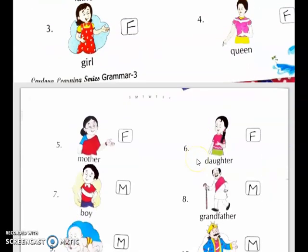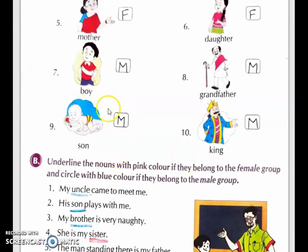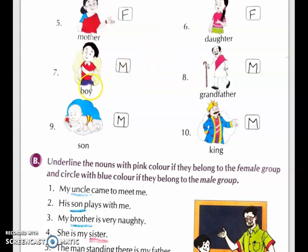Now turn your page to the next page. Fifth one: mother — mother is female, so we write F. Sixth one: daughter — daughter is female, so we write F. Seventh: boy — boy is male, so we write M. Eighth: grandfather — grandfather is also male, so we write M. Ninth: son — son is also male, so we write M. And the last one: king — king is also male, so we write M.